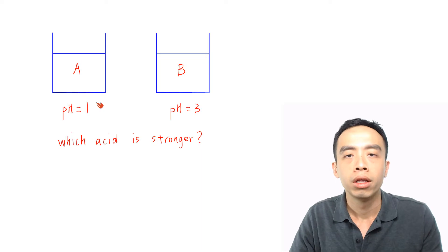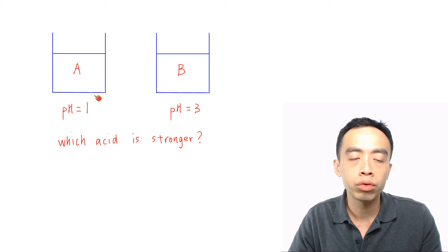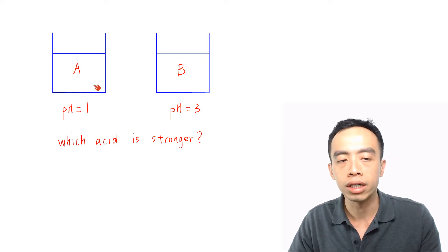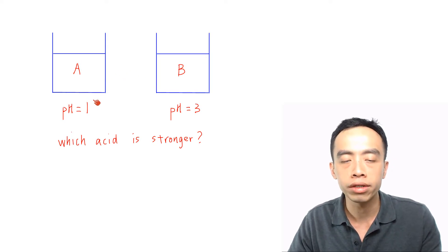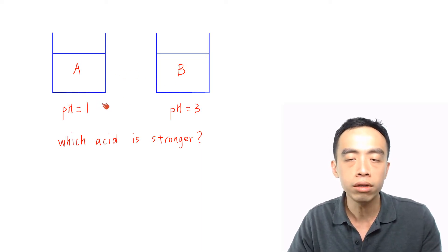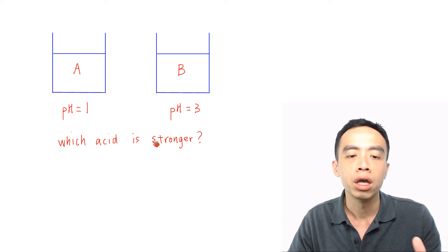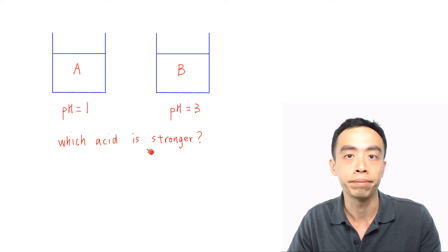Hi guys, now I have another question involving ionic equilibrium for you. So let's take a look at this question. Now what we have here are two acids, acid A and acid B. The pH of acid A is 1, and the pH of acid B is 3. So now the question is: which acid is a stronger acid?